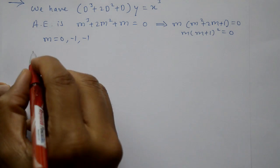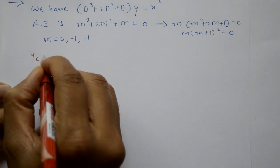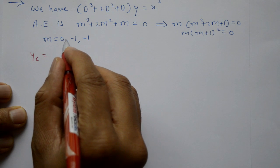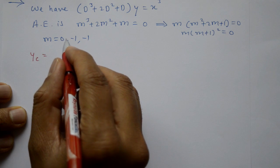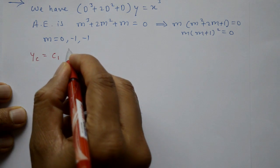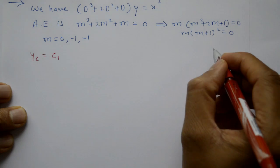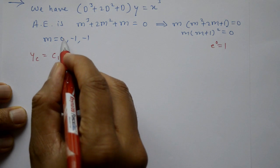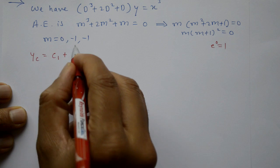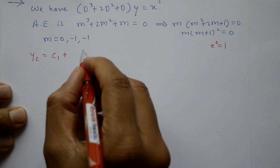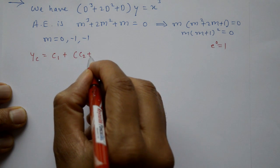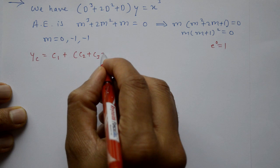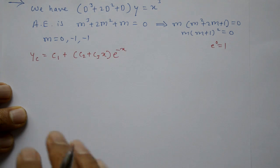Now the complementary function: two roots are same. The first root is 0, so c₁e^0 = c₁. Plus, since two roots are same at m = -1: complementary function is c₁ + (c₂ + c₃x)e^(-x).